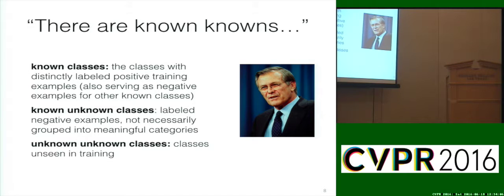Rumsfeld claimed there are known knowns — things we know we know — that's good, we can make decisions based on that knowledge. He also acknowledged there are things we know we don't know, and we can think of all sorts of interesting cases where that's an issue. For instance, we know we don't know all of the classes we could possibly encounter at testing time in machine learning. And then there's the very troubling case: unknown unknowns — things we don't know we don't know. Those are the classes we're missing at testing time that we can't even conceptualize.